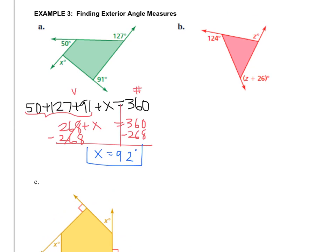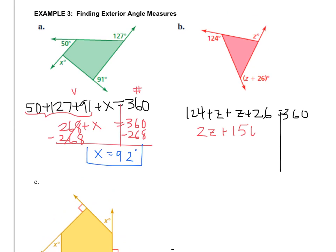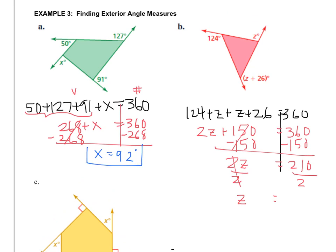Let's try another one. The equation is: 124 plus Z plus Z plus Z plus 26 equals 360. No matter what size shape you are, you're 360. Combining terms gives 3Z plus 150 equals 360. Subtract 150, then divide by 3, and Z equals 105 degrees.